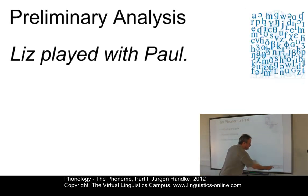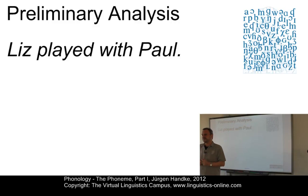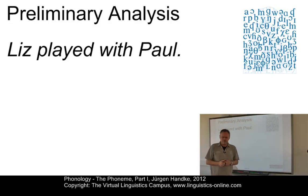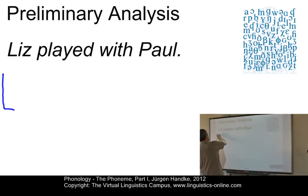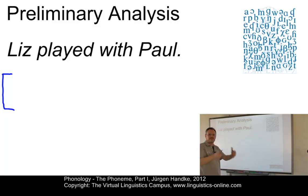So let's start with our string: 'Liz played with Paul.' Now I want to be as precise as possible in transcribing the phonetic details contained. In other words, I have to apply a narrow phonetic transcription. To signal such a transcription, we first of all need angular brackets. I will first use the set of symbols as supplied by the International Phonetic Association, and then in the next step I will add diacritic elements to add additional information.